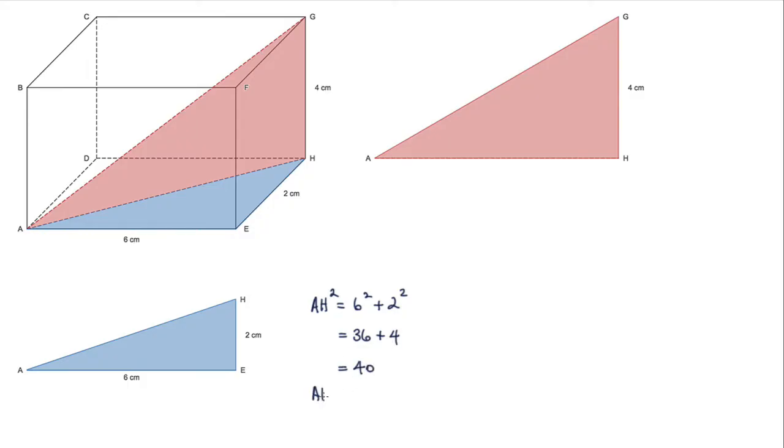So AH equals the square root of 40. I don't want to simplify the square root of 40 yet because I'm going to use this AH in the next triangle.